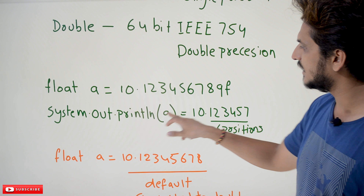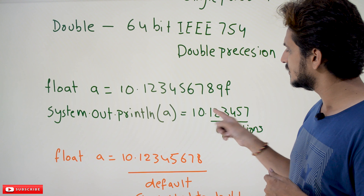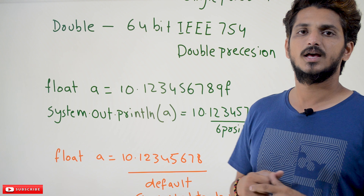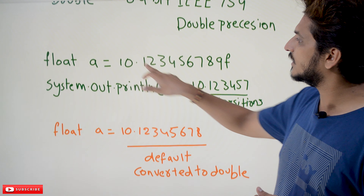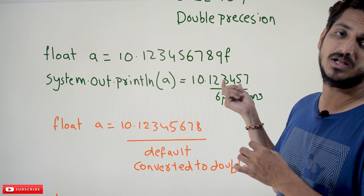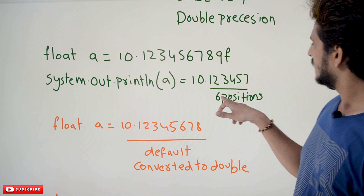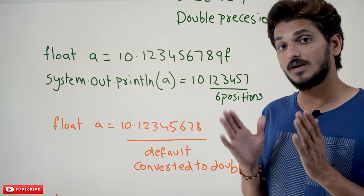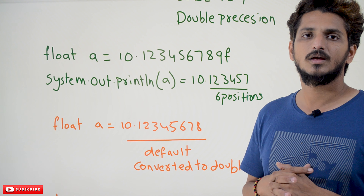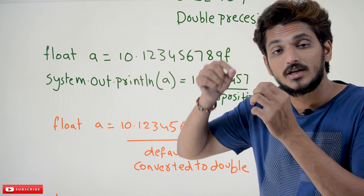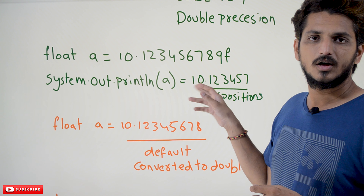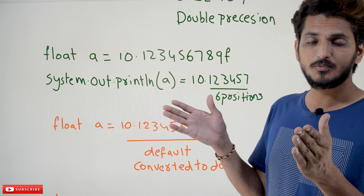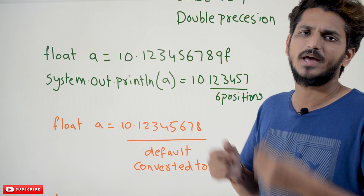We defined variable A of type float with that value. But what happens when we display it? System.out.println(A) is going to display 10.123457 — only 6 digits after the decimal point. In the float data type, only 6 positions after the decimal point are considered. In some systems it may take 7 positions. So if you want more accurate values after the decimal point, you have to go with double, which stores more positions and is therefore more accurate.